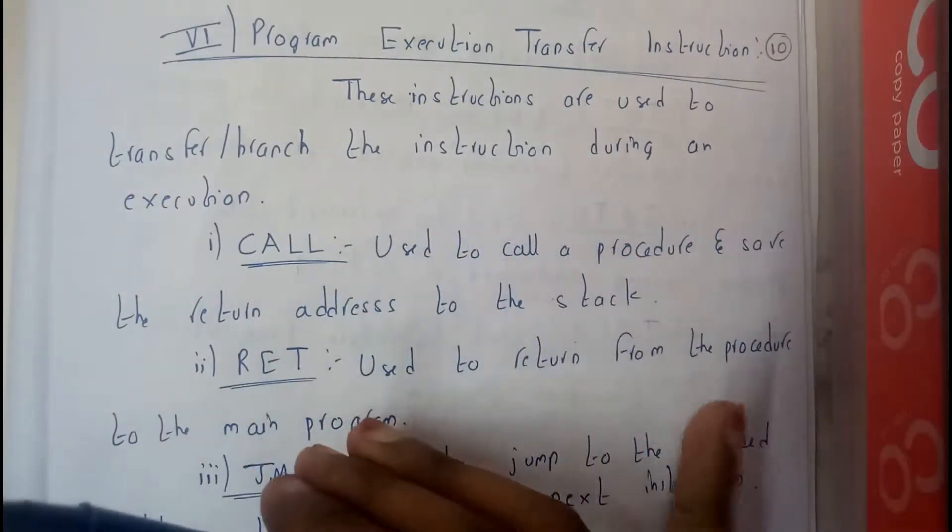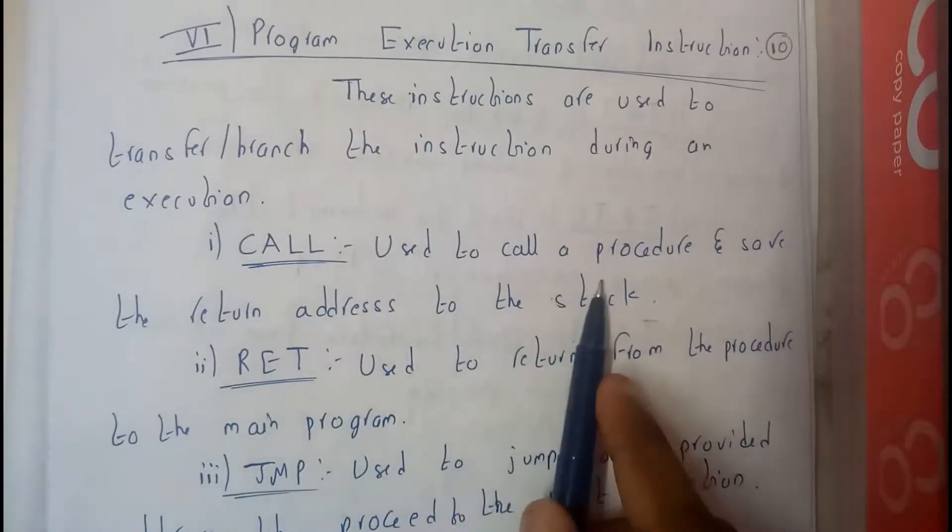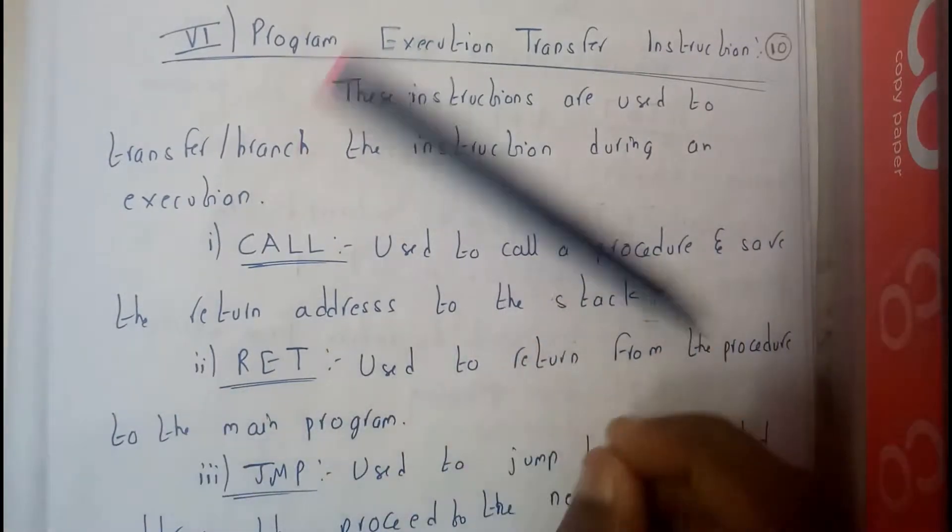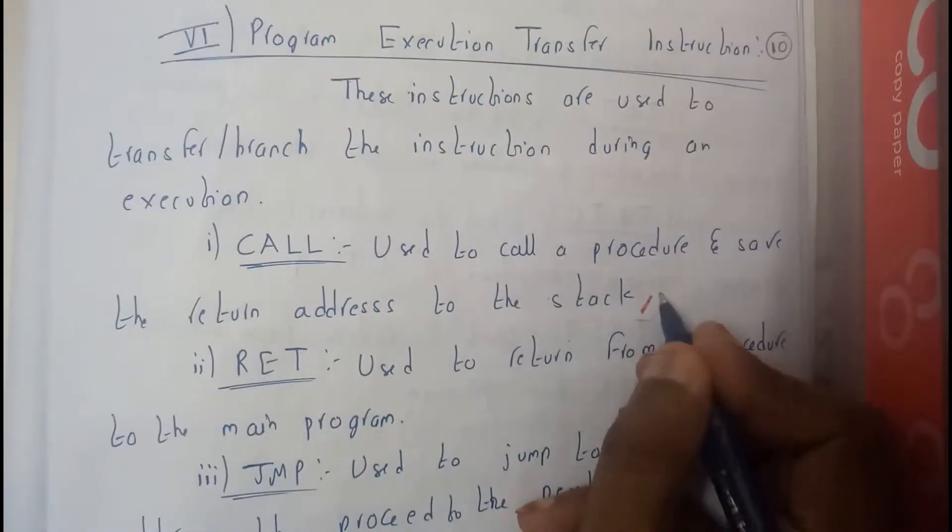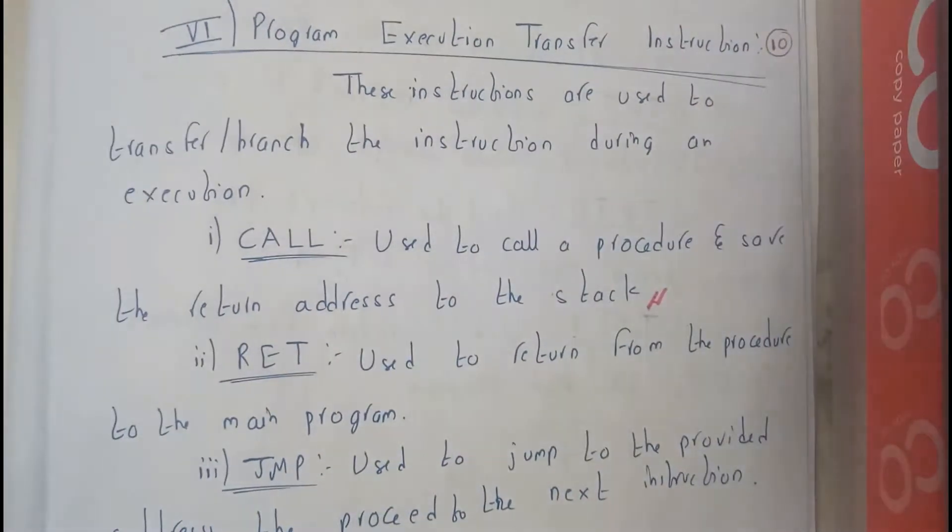those are nothing but call, return, and jump. Call is used to call a procedure and save the return address in stack. So this is one of the most important things: call stores the address in stack.